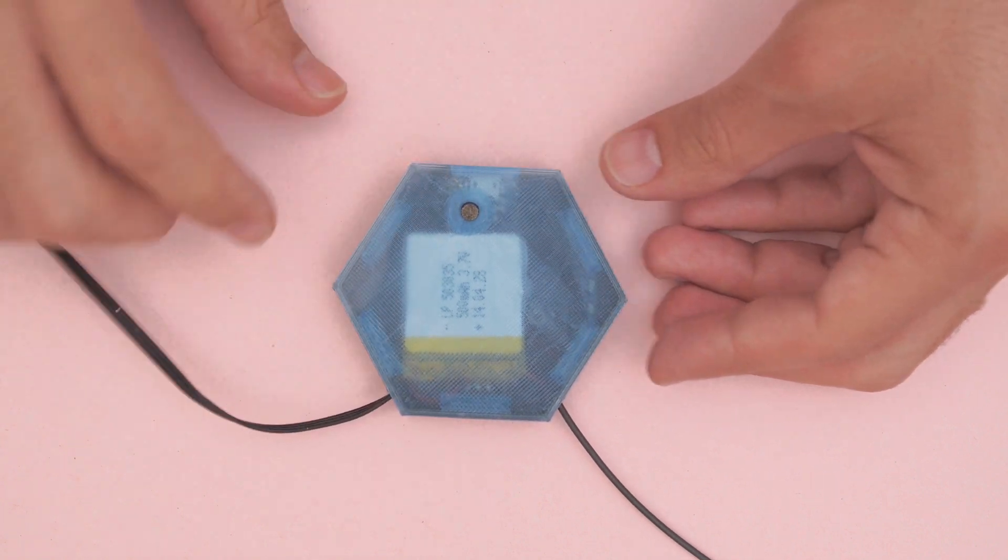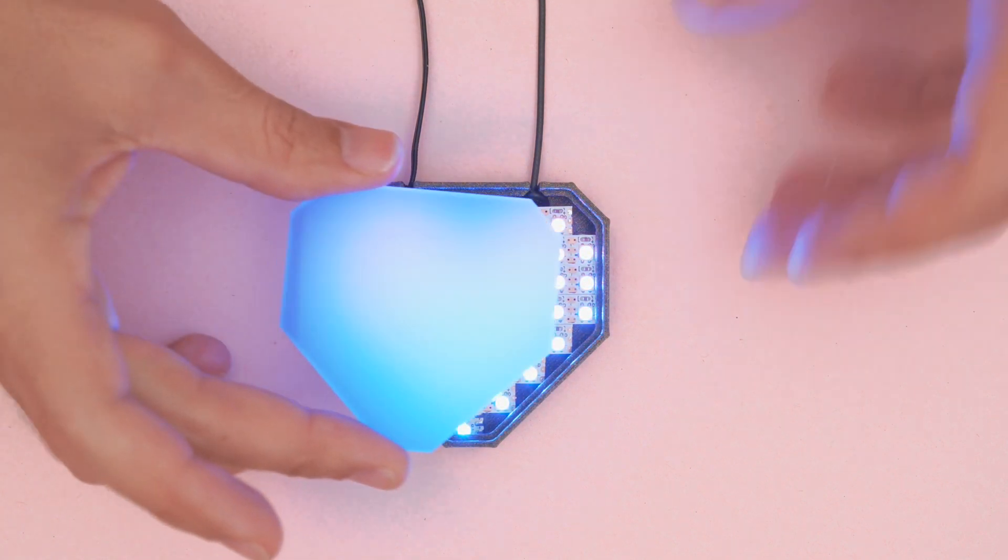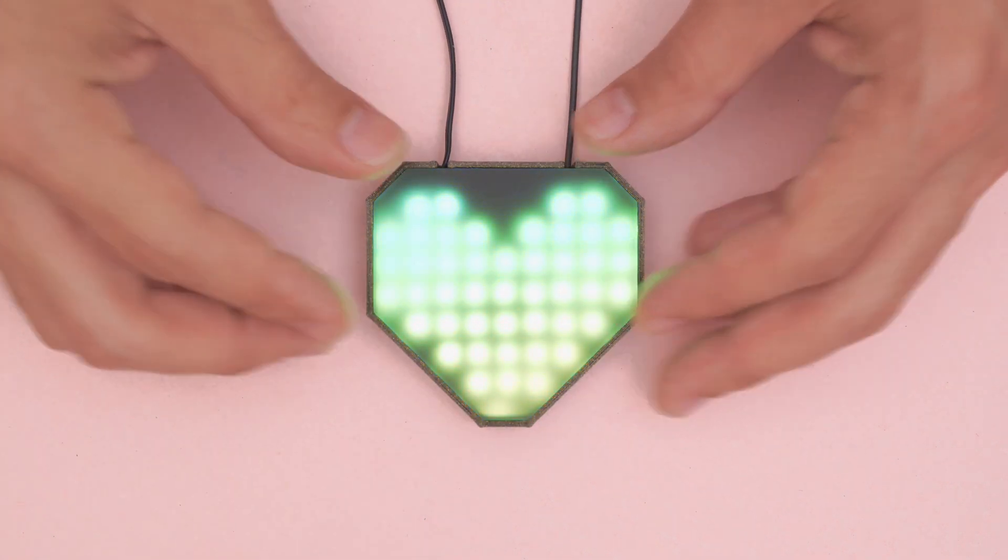The LED matrix is fitted inside the heart case with the wiring and filament fitted through the slits. After that, the acrylic can then be fitted on top and there you have it.